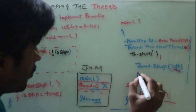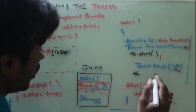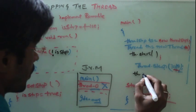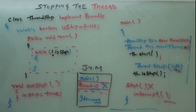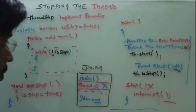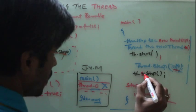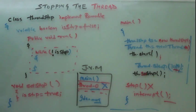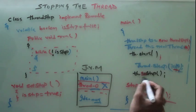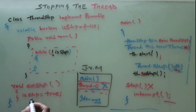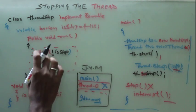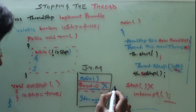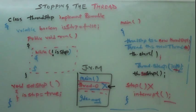And in main program, we will say th.setStop. So what will happen when we say th.setStop, the isStop volatile variable will become true. And in this loop, when this is true, this condition will fail and the thread zero will not run in the JVM. Now what we have to do? We have to interrupt the main thread.